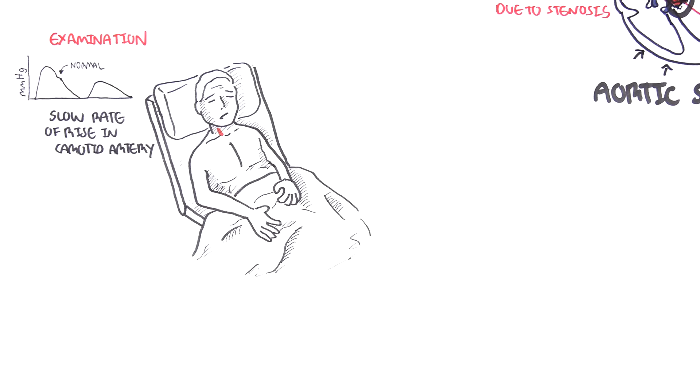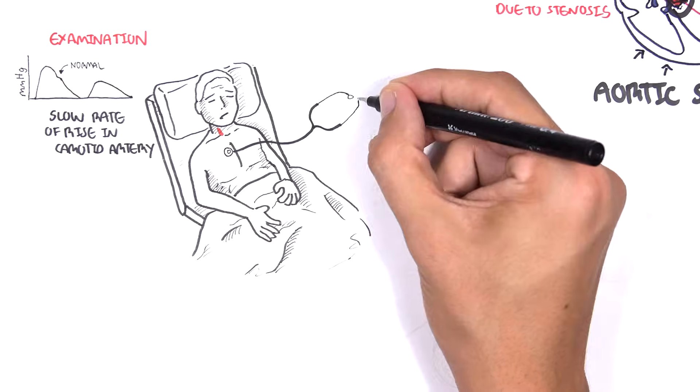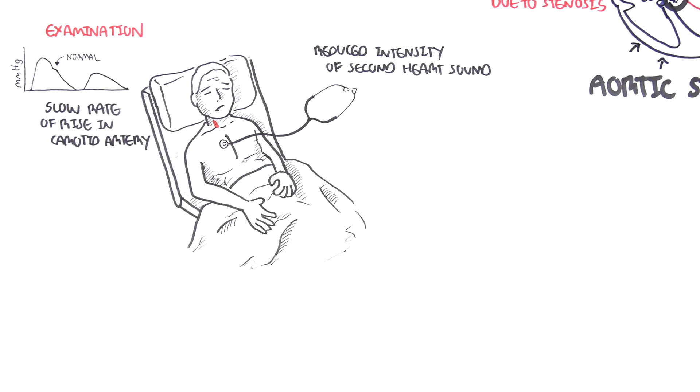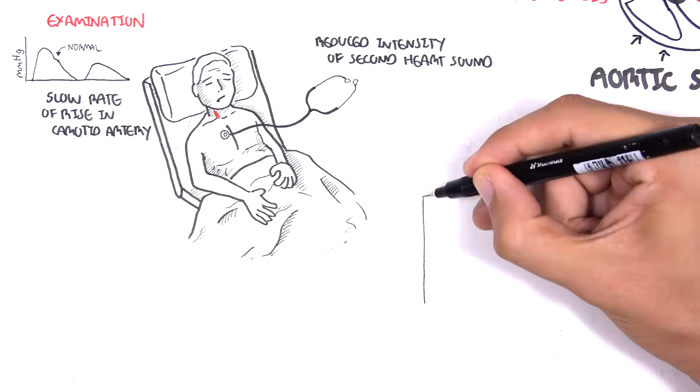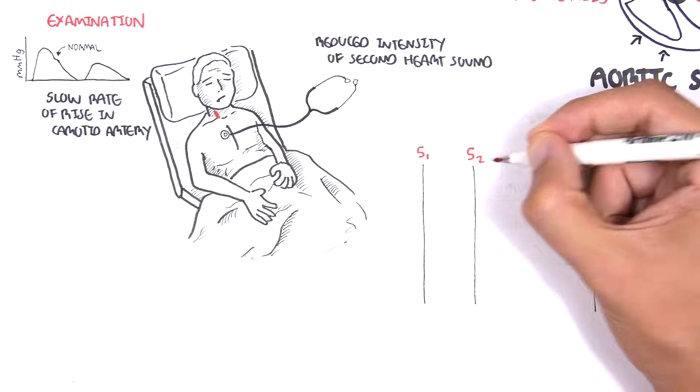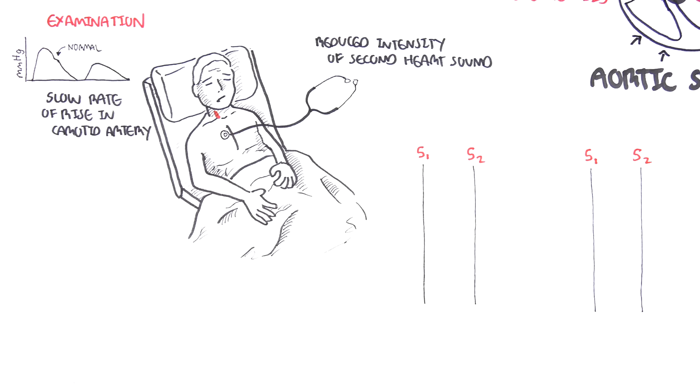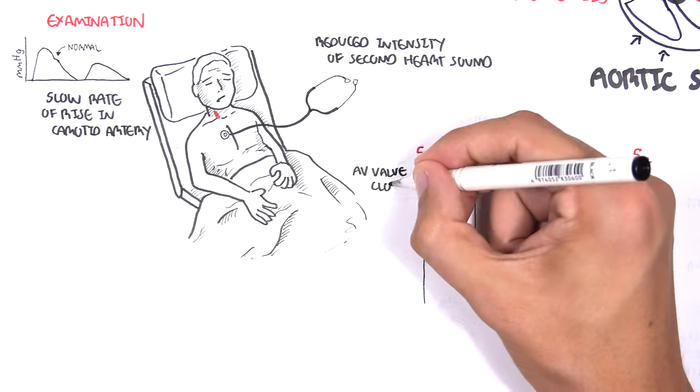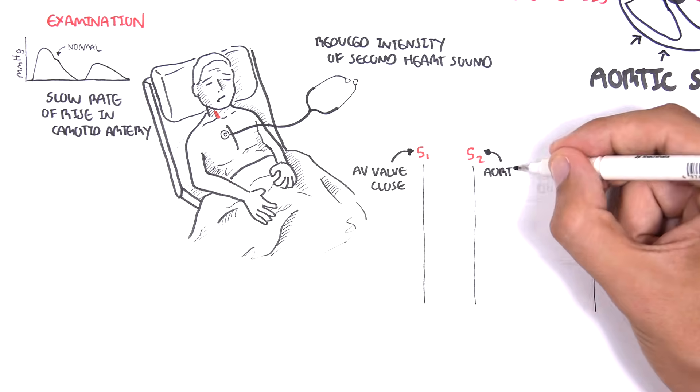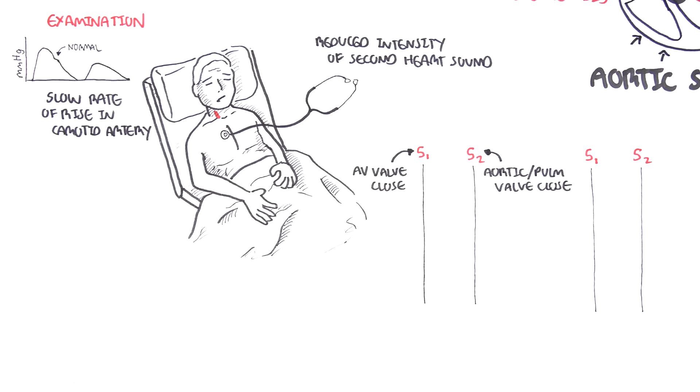On auscultation of the right second intercostal space parasternal, we have reduced intensity of the second heart sound, which is the sound when the aortic and pulmonary valve close. Drawing it out here, we normally have two heart sounds, S1 and S2. S1 is your AV valve closing, which are your tricuspid and mitral valves. And S2 is when your aortic and pulmonary valves close.